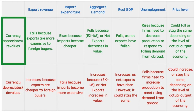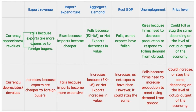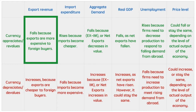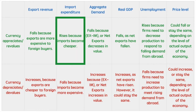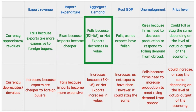First, let's see what happens when the currency strengthens. As it appreciates, export revenue falls because our exports are now more expensive to foreign buyers. They need to exchange more of their currency to buy the same amount of ours as before, and it is likely they will substitute away to other countries' exports that may be cheaper. Our import expenditure will rise because our currency is stronger and that makes foreign goods and services more affordable. Aggregate demand will fall as one of its components, net exports, decreases in value.